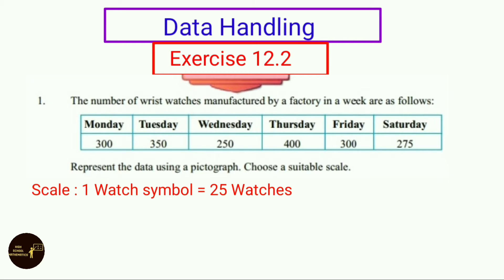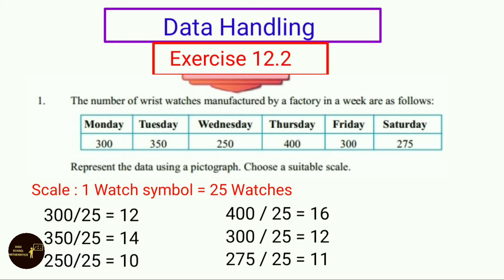Here we have taken 1 watch symbol equals to 25 watches. On Monday 300 wristwatches were manufactured. 300 by 25 equals to 12, so we have to represent with 12 symbols.